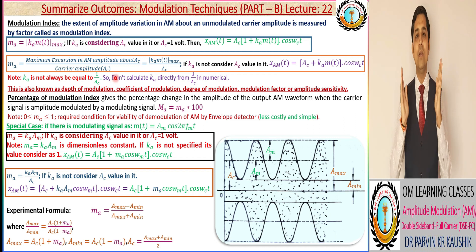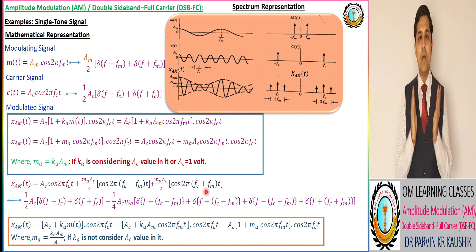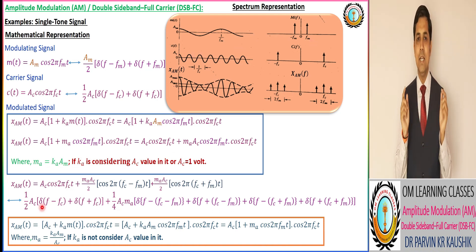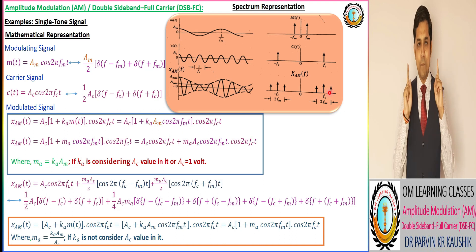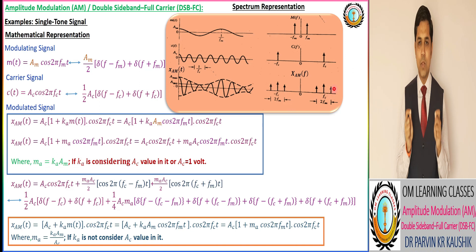Ka can or cannot be equivalent to 1/Ac, so always take care about it when solving problems. As per the mathematical representation of the modulated AM wave for a single tone signal, we have a spectrum representation. It is clear that the signal is present at ±fc frequency corresponding to the carrier signal, at ±(fc + fm) corresponding to the upper sideband signal, and at ±(fc − fm) corresponding to the lower sideband signal. So in the AM modulated wave, we have the carrier signal, upper sideband signal, and lower sideband signal.